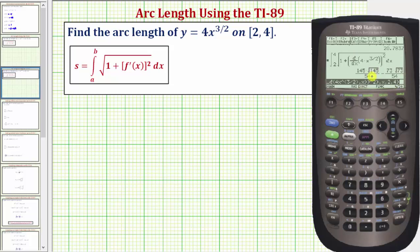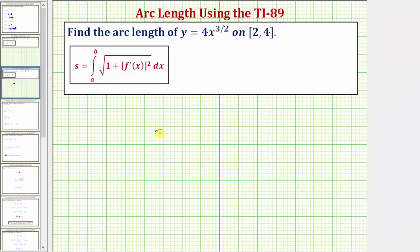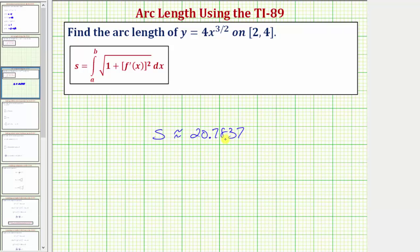And again we get the exact value of the arc length. We press diamond enter, we get the decimal approximation. So let's record this as approximately 20.7837. So there are several ways to determine arc length on the TI-89 graphing calculator.